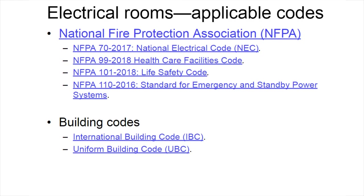NFPA Section 101 is the Life Safety Code, with references addressing exit passageways and egress requirements. Section 110 is the standard for emergency and standby power systems, and Chapter 7 covers installation and environmental considerations. Lastly, building codes from IBC, the International Building Code, and UBC, the Uniform Building Code, also identify panic hardware requirements and affect room ratings based on occupancies.